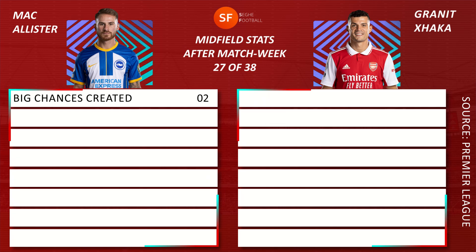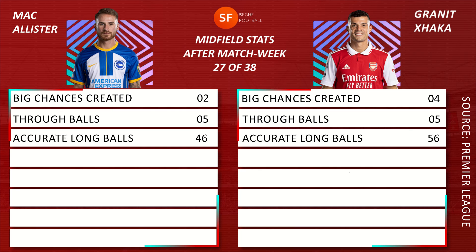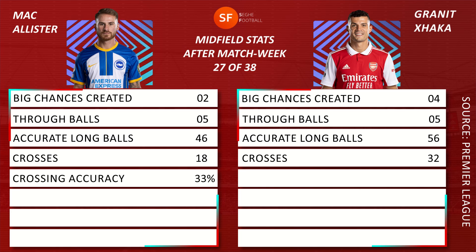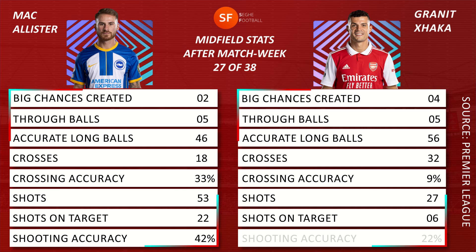McAllister big chances created: 2, Xhaka: 4. McAllister throw balls: 5, Xhaka: 5. McAllister accurate long balls: 46, Xhaka: 56. McAllister crosses: 18, Xhaka: 32. McAllister crossing accuracy: 33%, Xhaka: 9%. McAllister shots: 53, Xhaka shots: 27. McAllister shots on target: 22, Xhaka: 6. McAllister shooting accuracy: 42%, Xhaka: 22%.